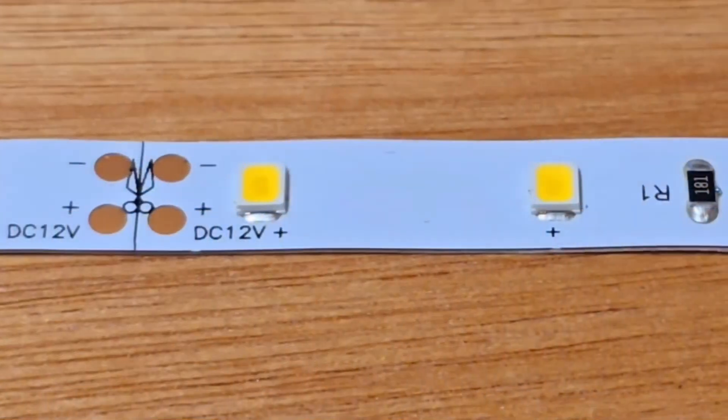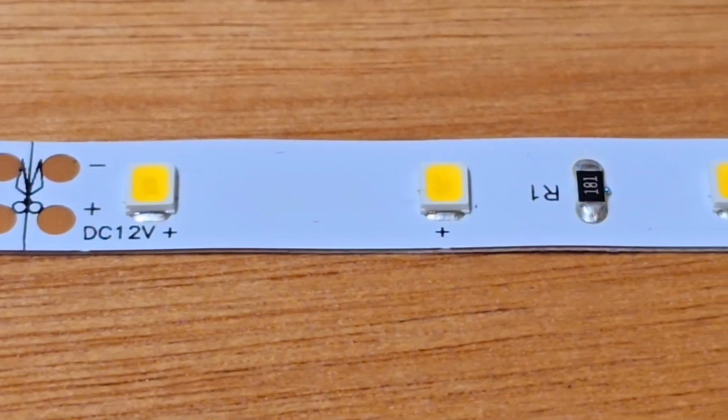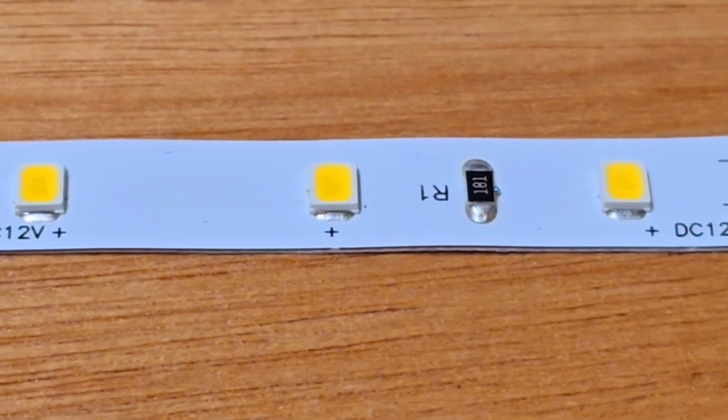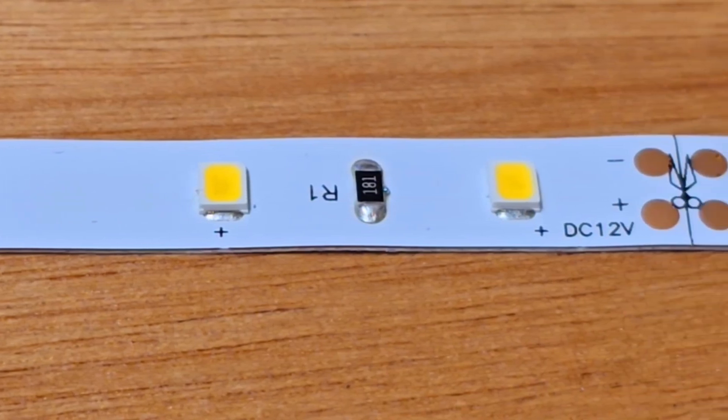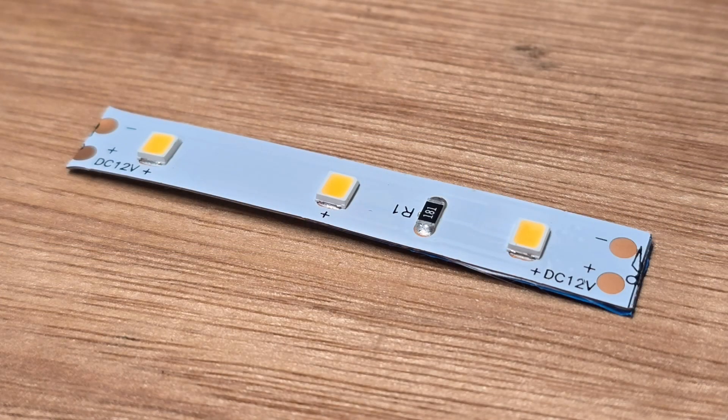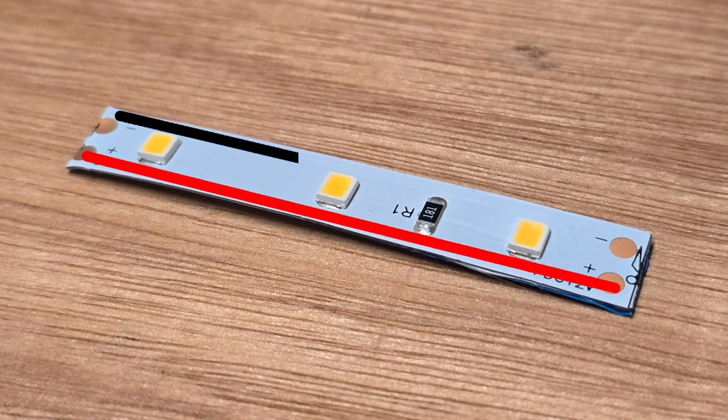These cut points are part of the reason that there's only one resistor between the three LEDs. Each little section of the strip is like a pre-wired lighting circuit that's ready to go. Running down the outside are the two strips of copper that feed the mini LED circuits, a positive on one side and a negative on the other.